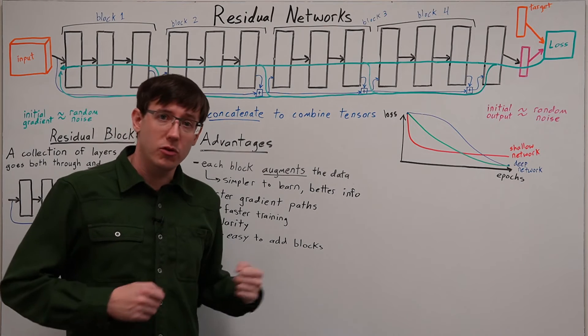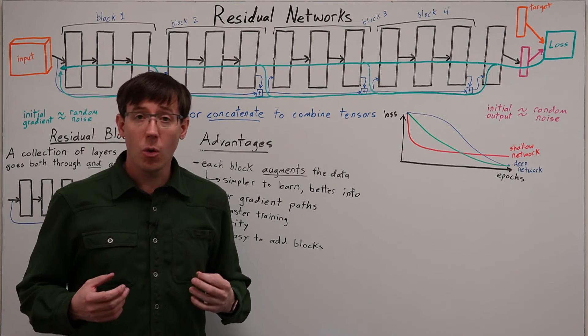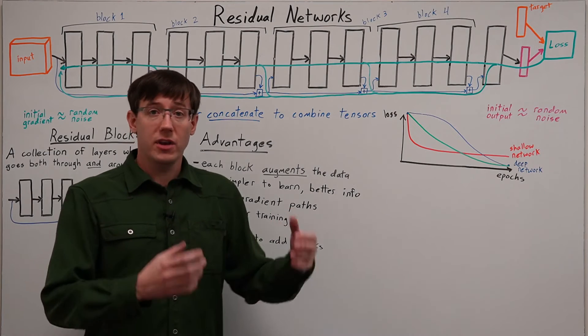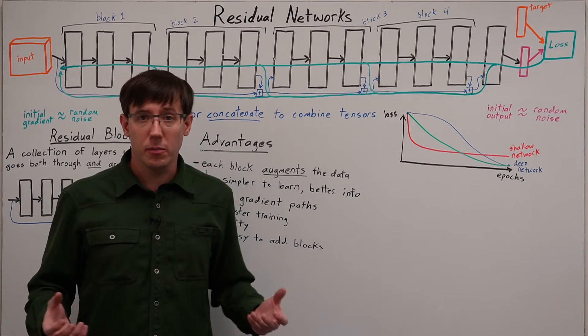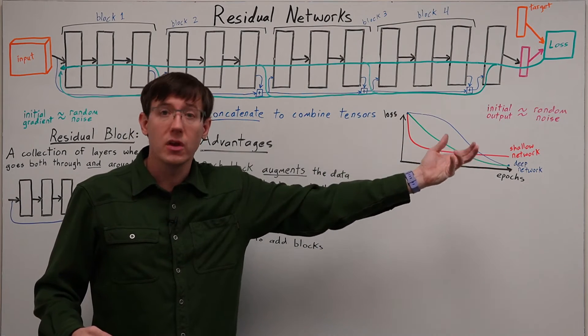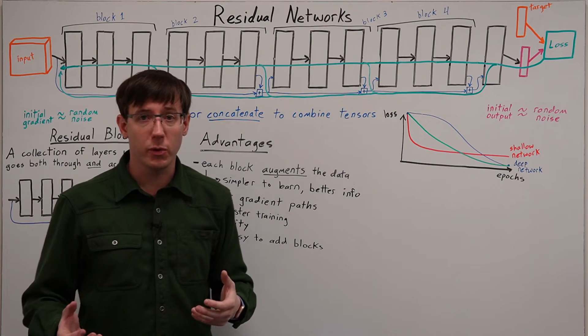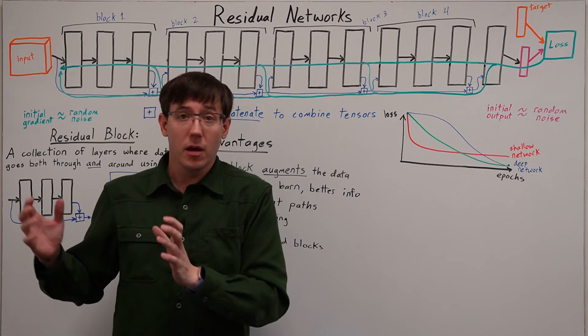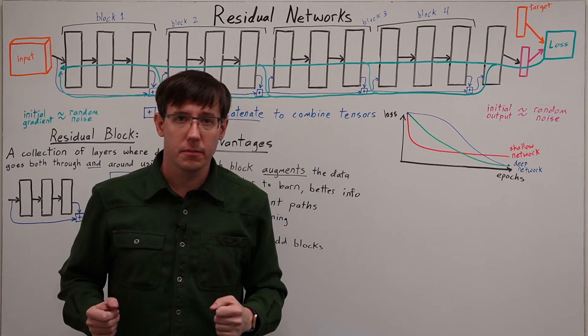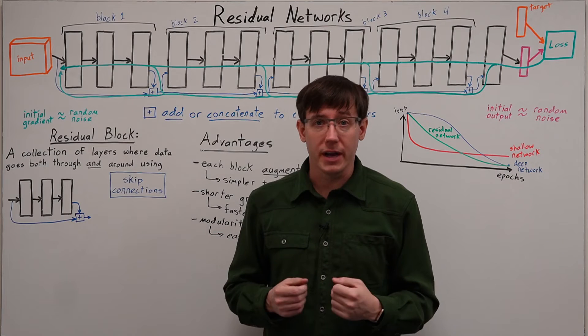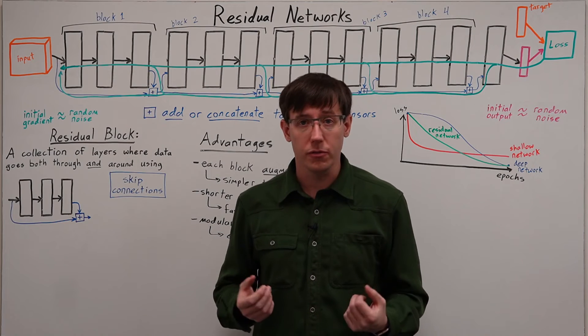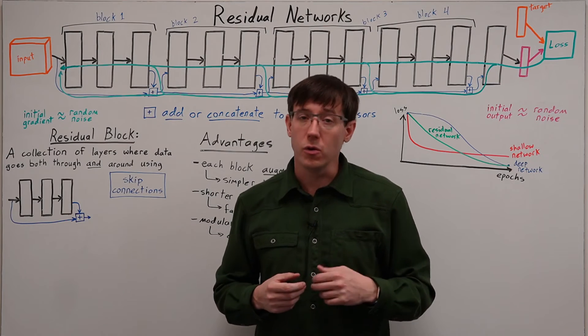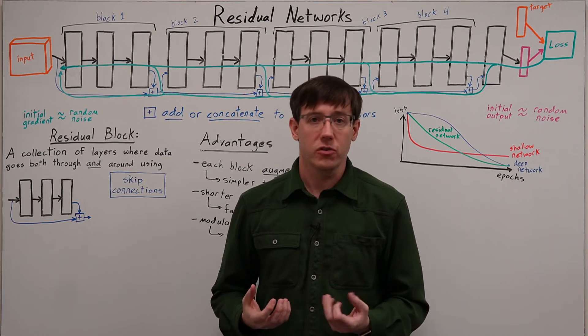And so when you read about residual networks in a paper, or see an implementation in a model zoo, you'll often find several different variations on the same network with different numbers of blocks to achieve different trade-offs between the resources needed to train the network and the power of the resulting model. Because of all this, residual network architectures are extremely powerful, and many of the same ideas have also been incorporated into the other network architectures we will study soon.